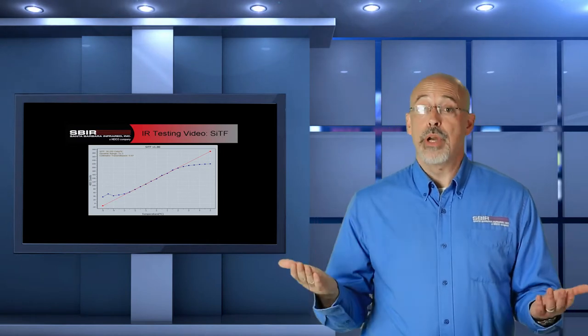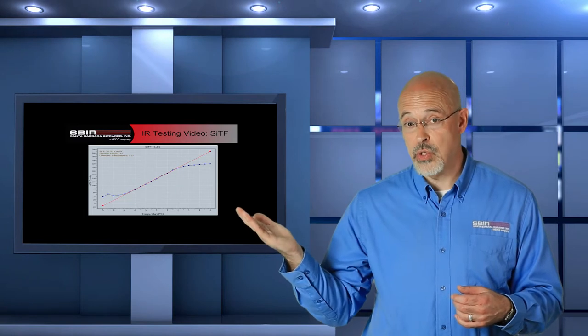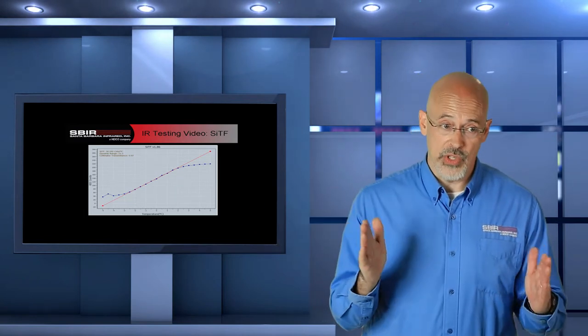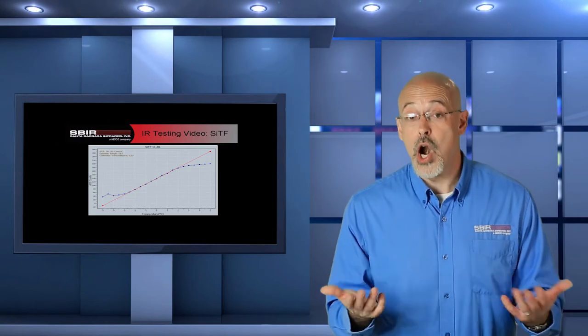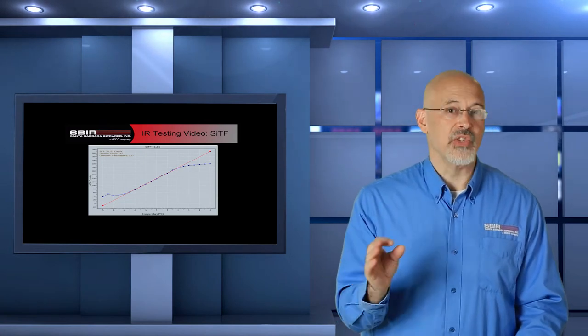That important middle region is where we take our measurement and look at the slope to calculate our SITF. We can also use the measurement to look at the operating range of the camera — we know when it doesn't get enough temperature to stimulate it, when it starts responding, and where it starts to saturate. That region of interest is our operating temperature range. We can also calculate dynamic range, which requires the noise measurement — we'll cover dynamic range in the next video.